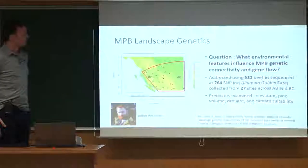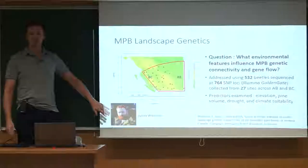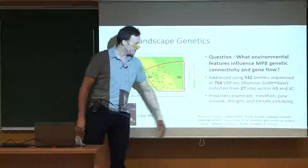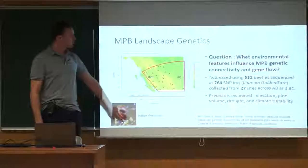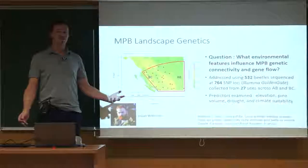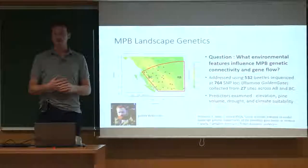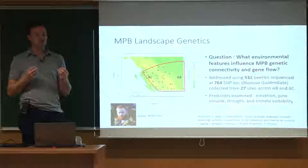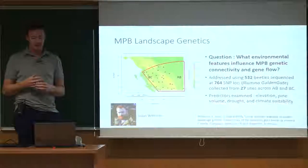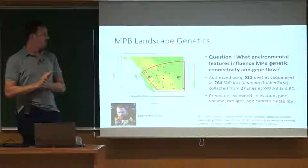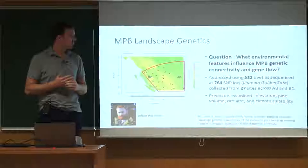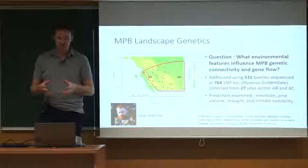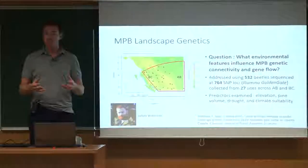I'll start with the landscape genetics project — the work of my PhD student Julian, currently in review in the Canadian Journal of Forest Research. It addresses a relatively simple question: what environmental features actually influence genetic connectivity and gene flow? How can beetles get from one place to another? What might limit movement, and what constraints have these populations recently overcome to expand as much as they have? We looked at this using 760 SNP loci sequenced using the Golden Gate platform from about 27 sites across Alberta and British Columbia.